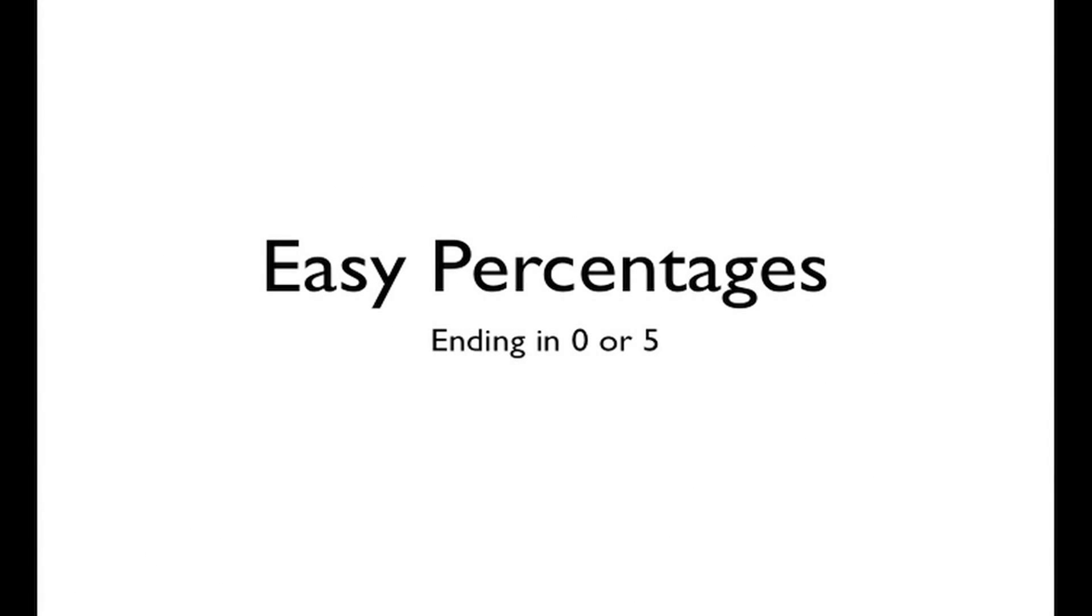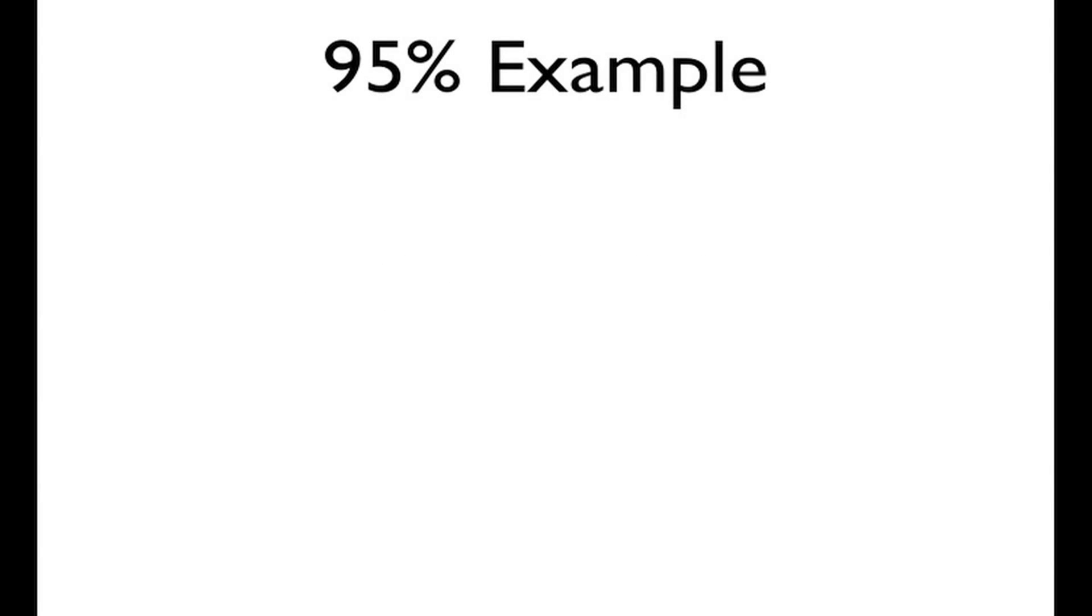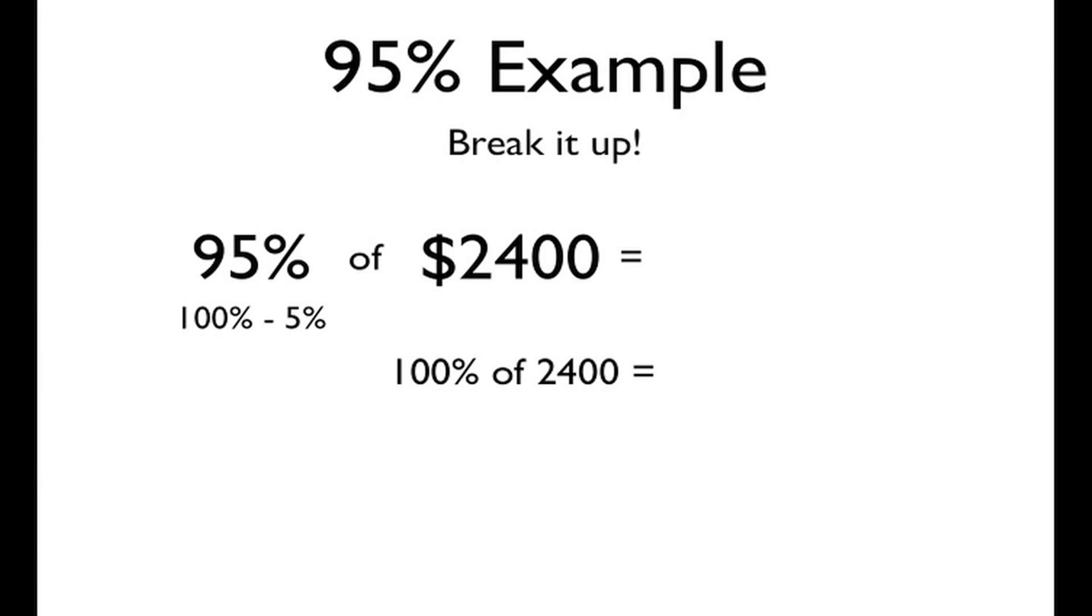Let's start off by doing some easy percentages. I consider the easy ones to be anything ending in 0 or 5. 95% is one example of these. To solve 95% of 2400, we're going to break 95% into two parts, 100% minus 5%. 100% of 2400 doesn't change, it's still 2400. To find 5%, we're going to remember back to our previous lesson, where we divide by 2 and take 10%. So dividing by 2 gives us 1200, and then taking 10% gives us 120.